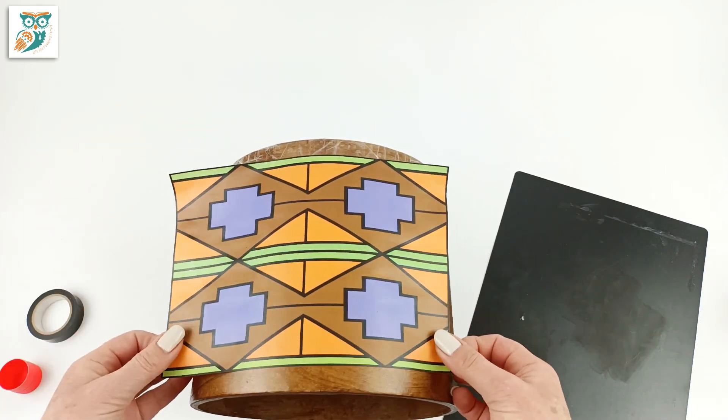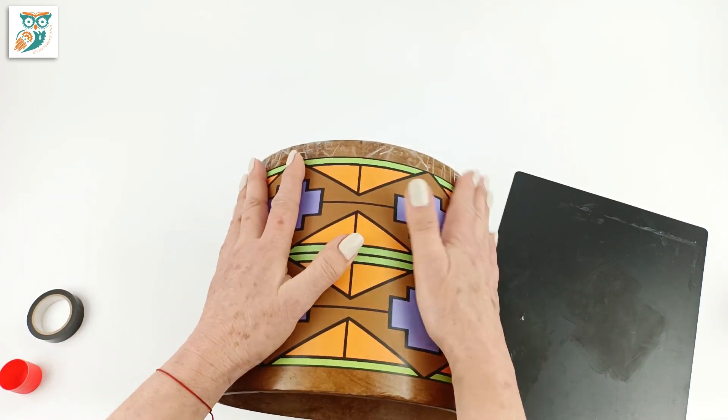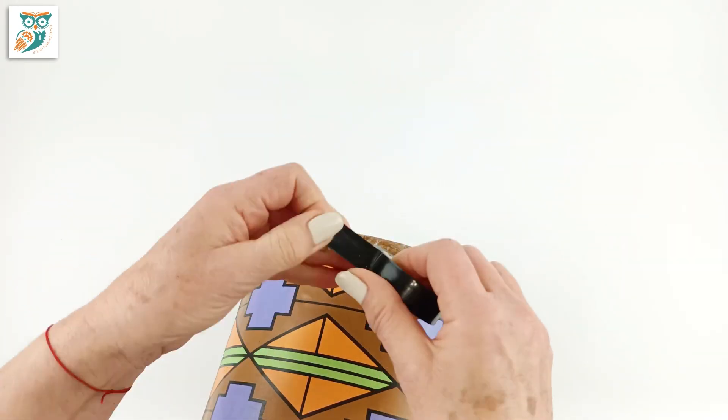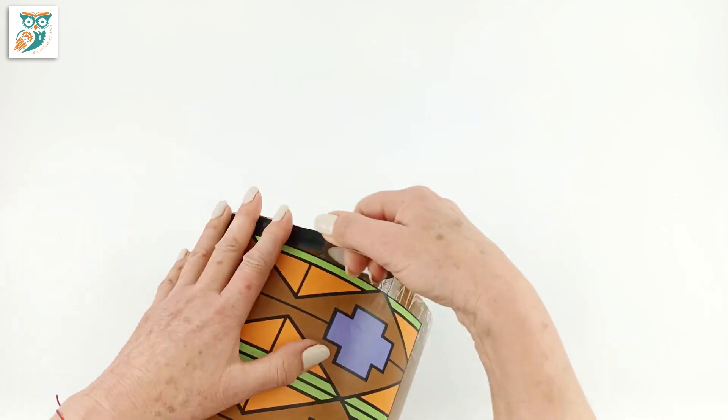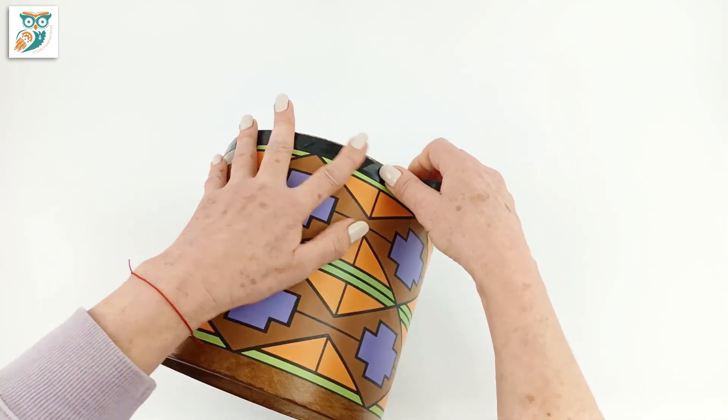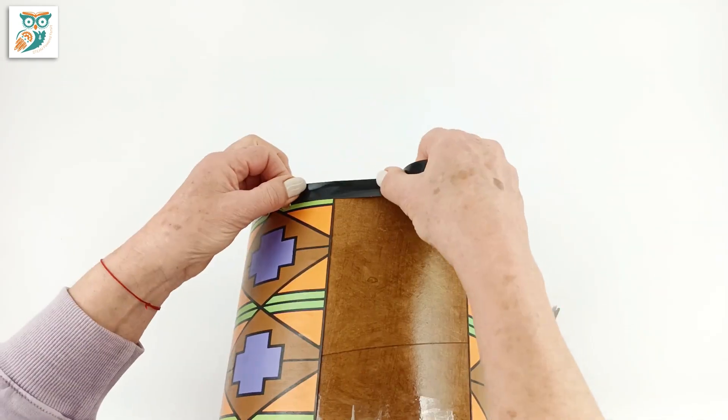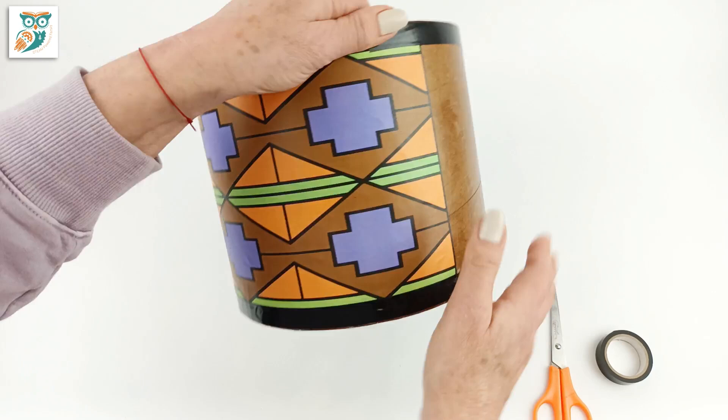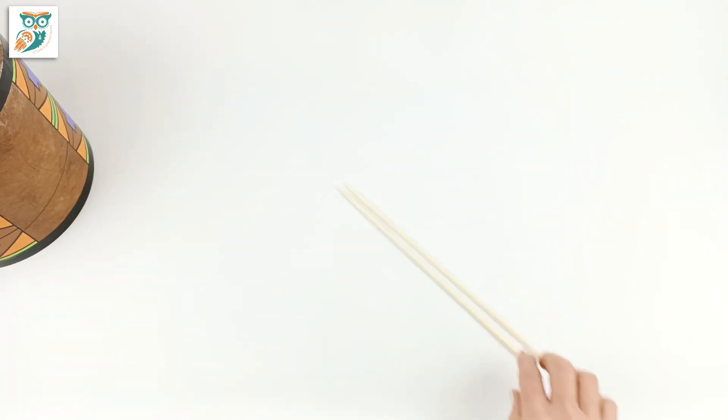There we go, our second piece is on and our drum has been decorated. Now we're going to grab some electrical tape—you could also use hockey tape for this step—and we're going to put a ring around the top and the bottom. Along the top, this helps to secure our tape skin, and on the bottom it's just to help make it look nice and finished.